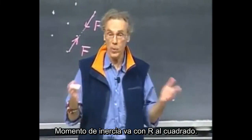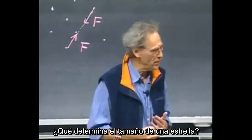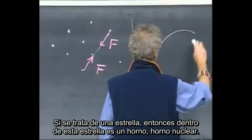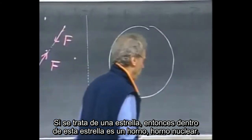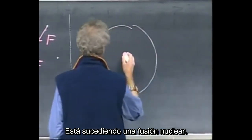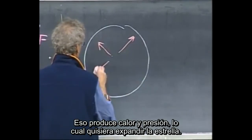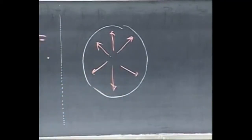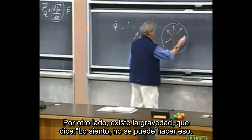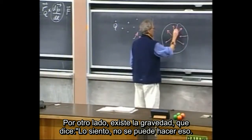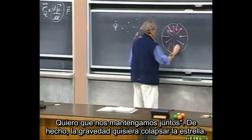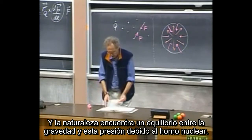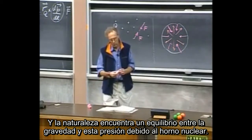Moment of inertia goes with r squared. What determines the size of a star? Inside the star is a nuclear furnace — nuclear fusion is going on — that produces heat and pressure, which wants to expand the star. On the other hand, there is gravity, which wants to hold it together and in fact would like to collapse the star. Nature finds a balance between gravity and the pressure due to the nuclear furnace.